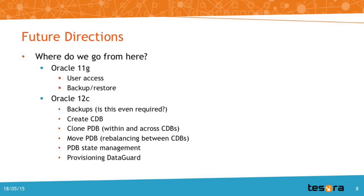So where do we go from here? With Oracle 11G, we'll need to add user access controls, and it would be great to have backup and restore capabilities. For 12C, it's a little more complex — this is a database instance being managed outside of Trove, so it doesn't necessarily make sense to do backups. This may be a point where we need feedback from operators and customers actually using 12C in production. Things that probably do make sense include how to create the container database, how to clone pluggable databases within a container or move them across containers for balancing, state management, and maybe even provisioning Data Guard.